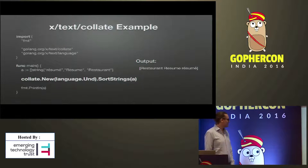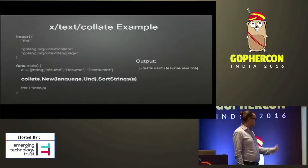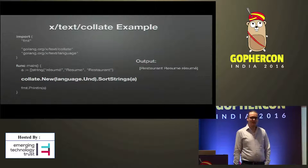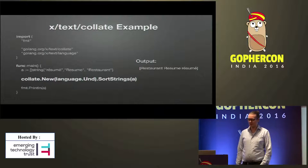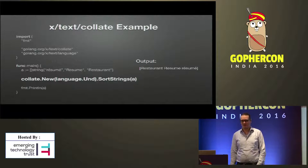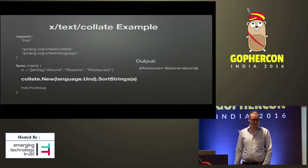For collation — comparing strings — a short example: if you want to sort three strings, you create a collate instance for the root language and then sort the strings. You get the expected output. It's pretty easy to use.